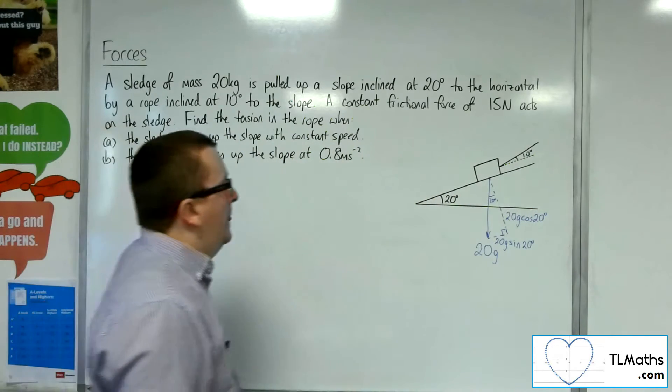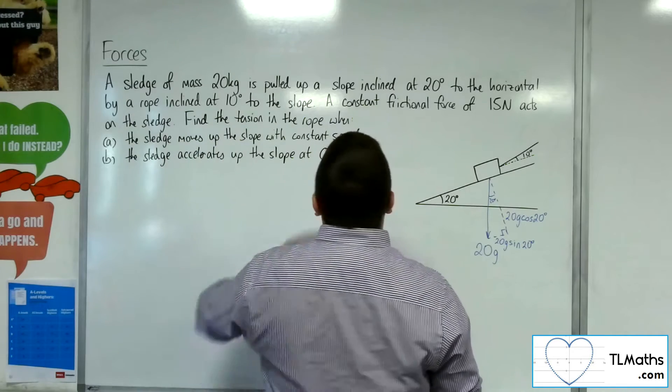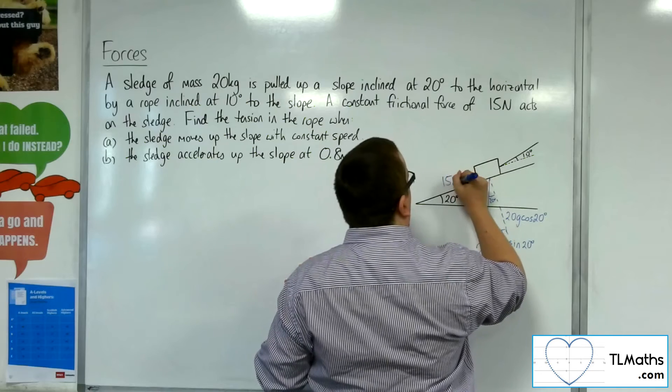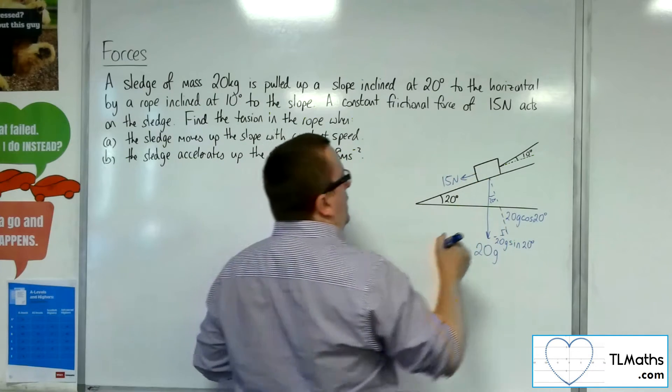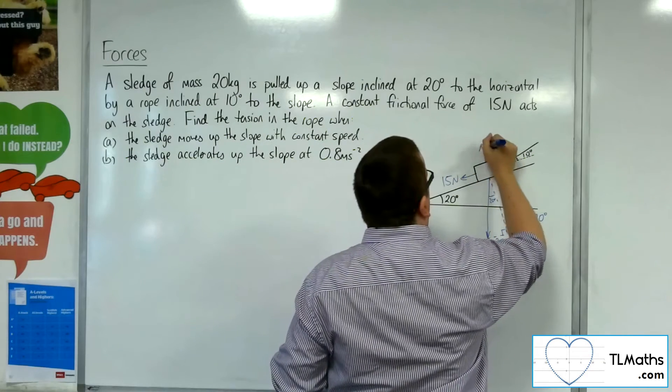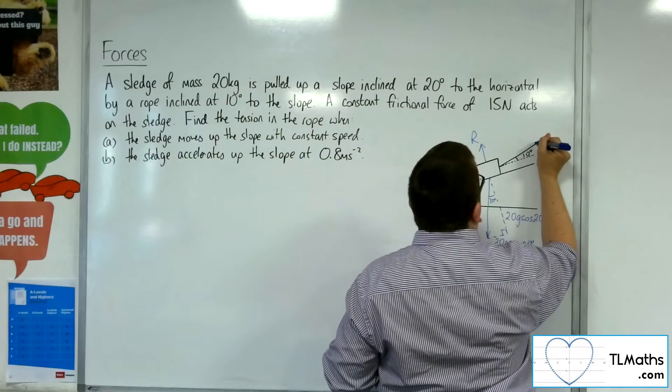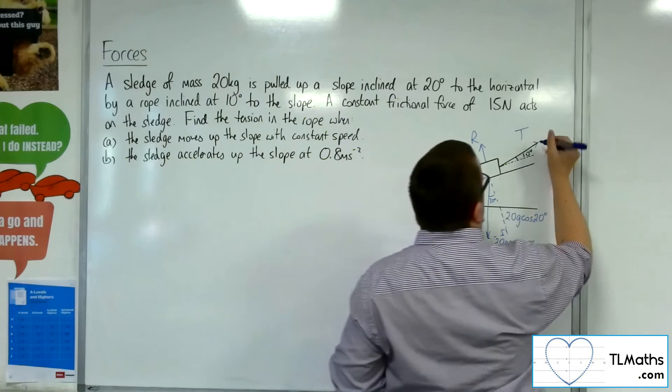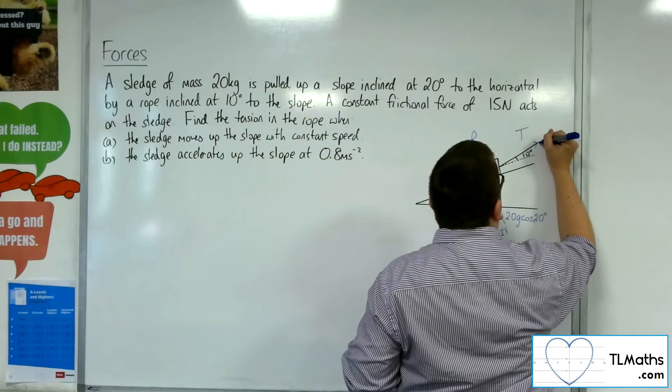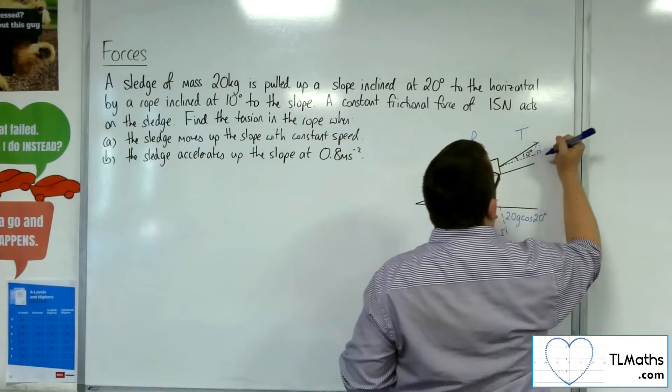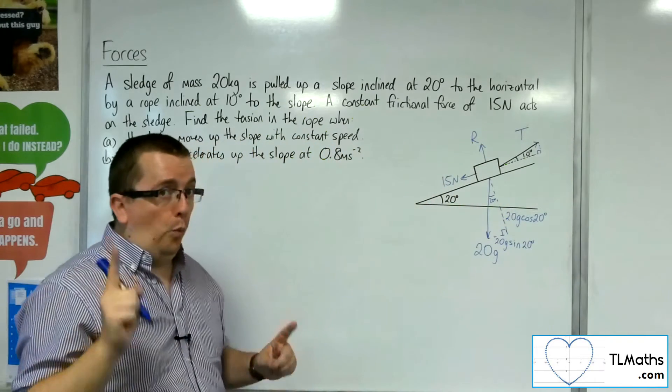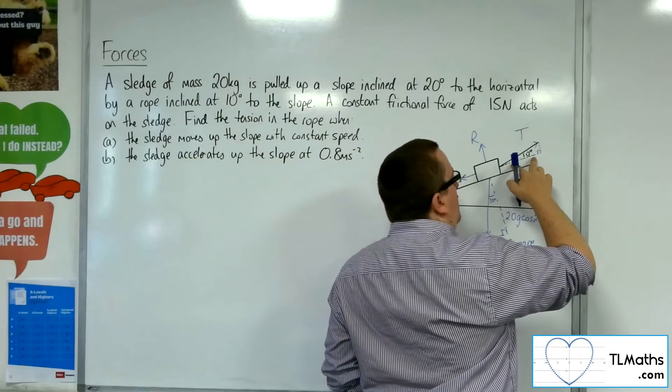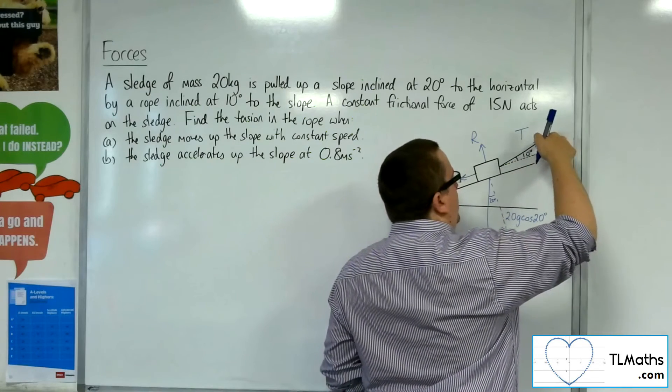Now I've got this frictional force of 15 newtons. So 15 newtons working in that direction. I've got the normal reaction force R. I've got this tension in the rope. Now what I'm going to want to do is I'm going to want to split that up into its component parts as well.